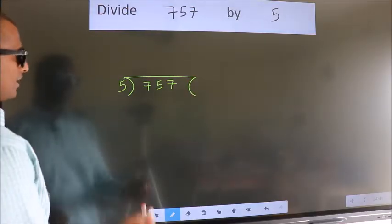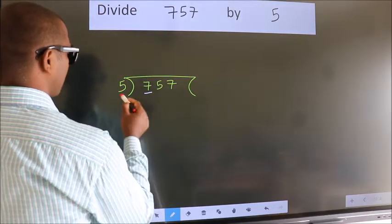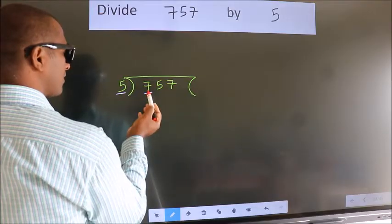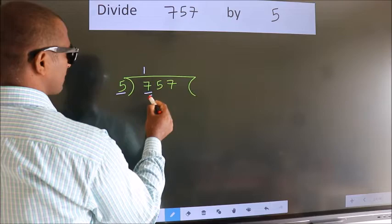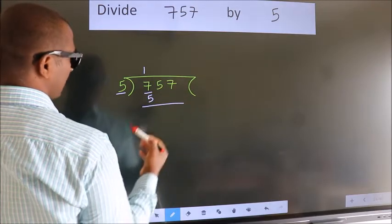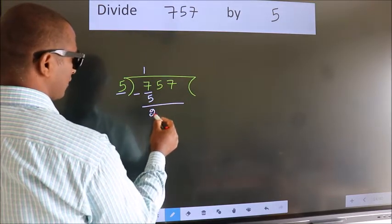Next. Here we have 7, here 5. A number close to 7 in 5 table is 5 once 5. Now we should subtract. We get 2.